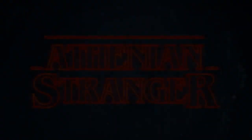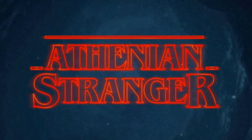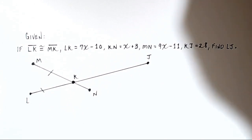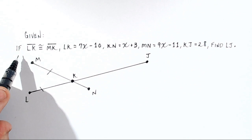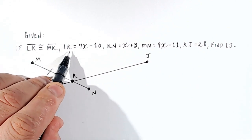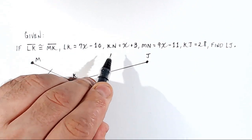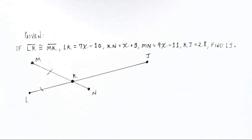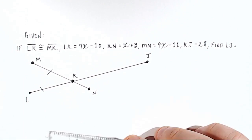In this problem we are going to take a look at another geometry application that involves finding a missing value using geometry knowledge. Here's what we're given: if LK is congruent to MK, and LK equals 7x minus 10, and KN equals x plus 3, and MN equals 9x minus 11, and KJ equals 28 — find LJ.